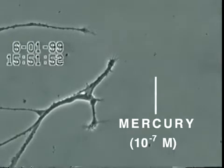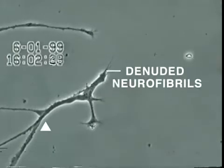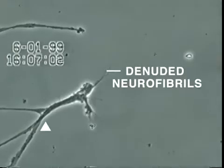Over the next 30 minutes, the neurite membrane underwent rapid degeneration, leaving behind the denuded neurofibrils seen here.